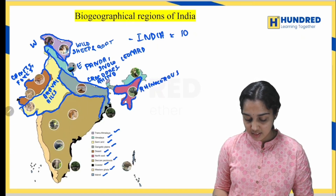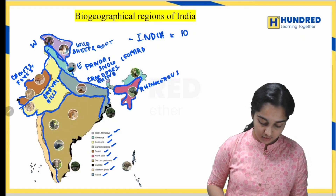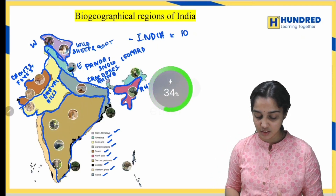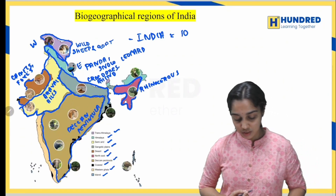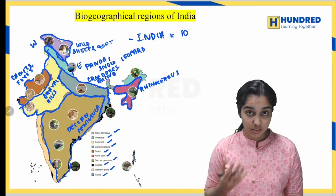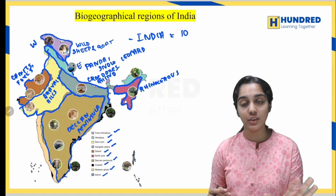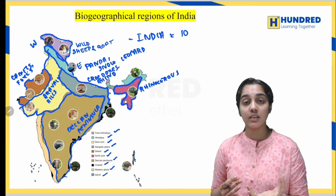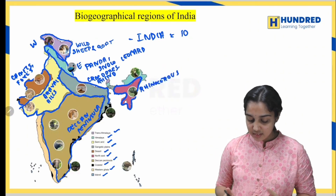Next is the Deccan Peninsula, which occupies the largest area. In the Deccan Peninsula we have tigers, sloth bears, elephants, and sambar deer. The sambar is not the food — it is the sambar deer, which is also listed in the red-listed species.